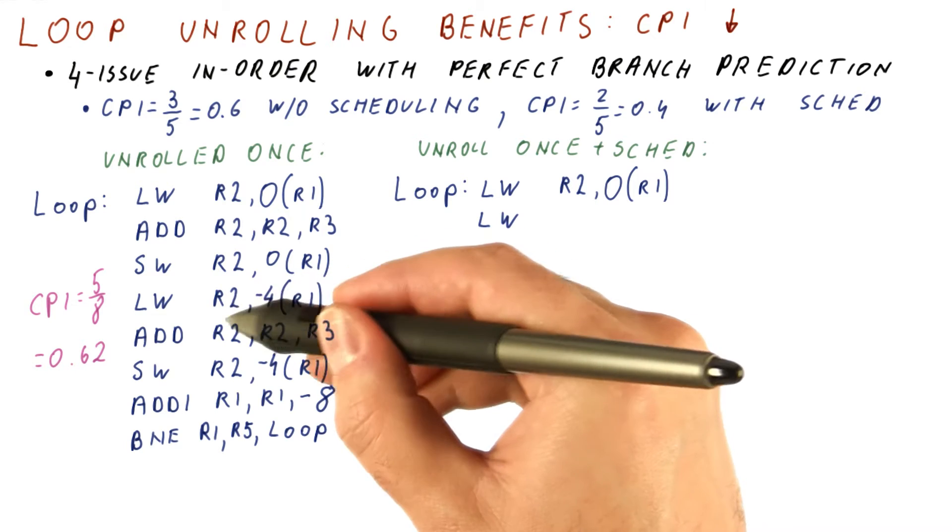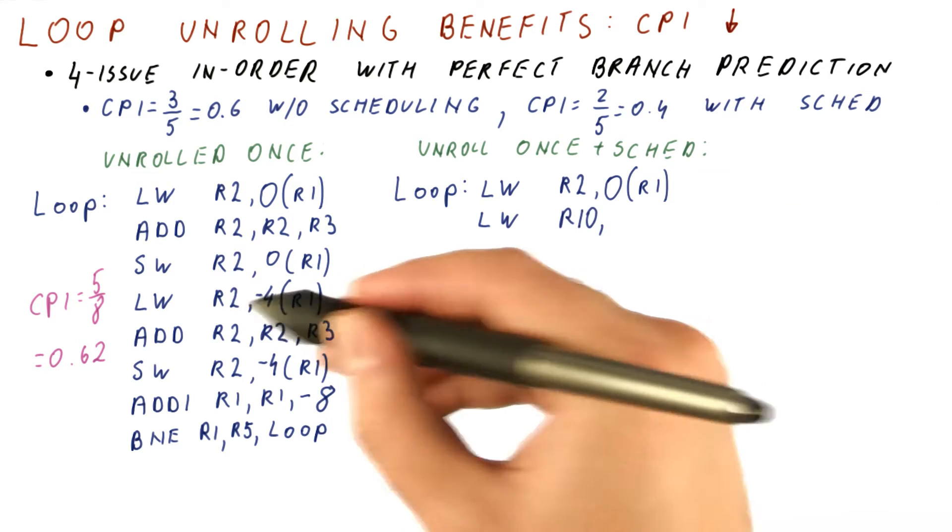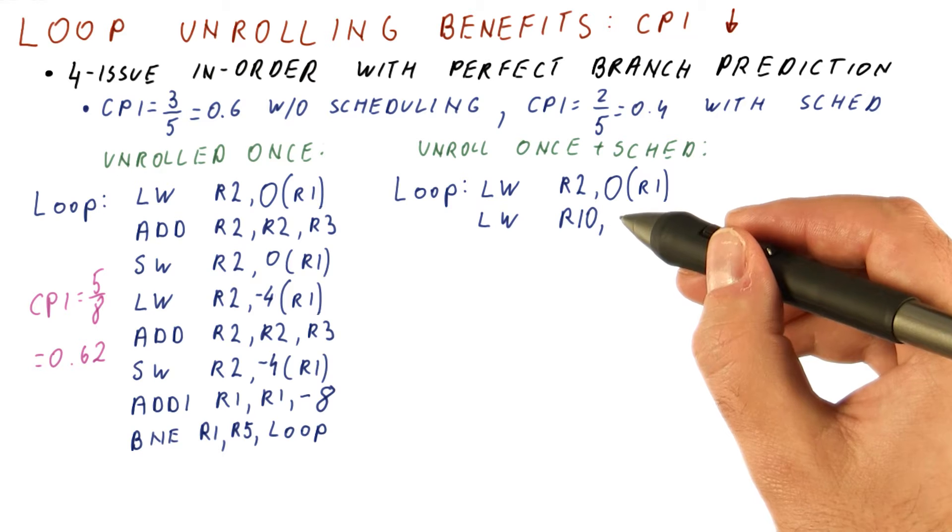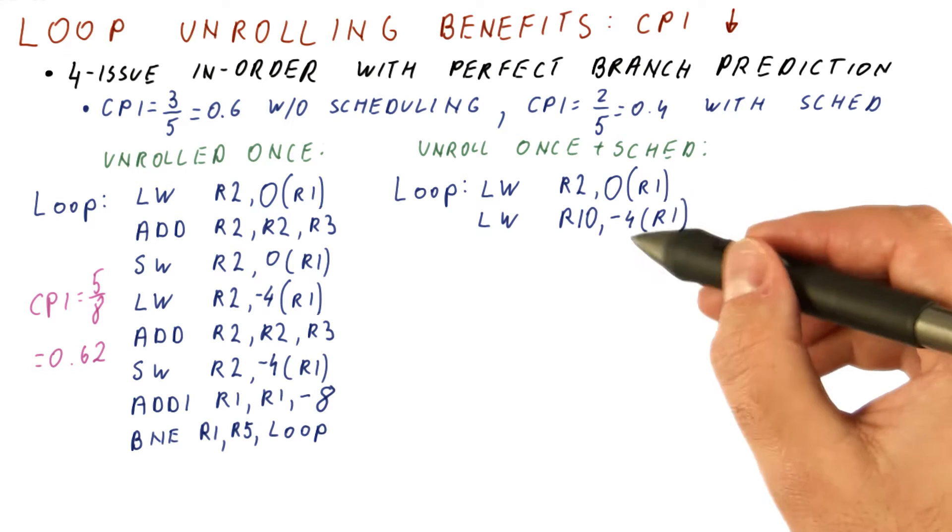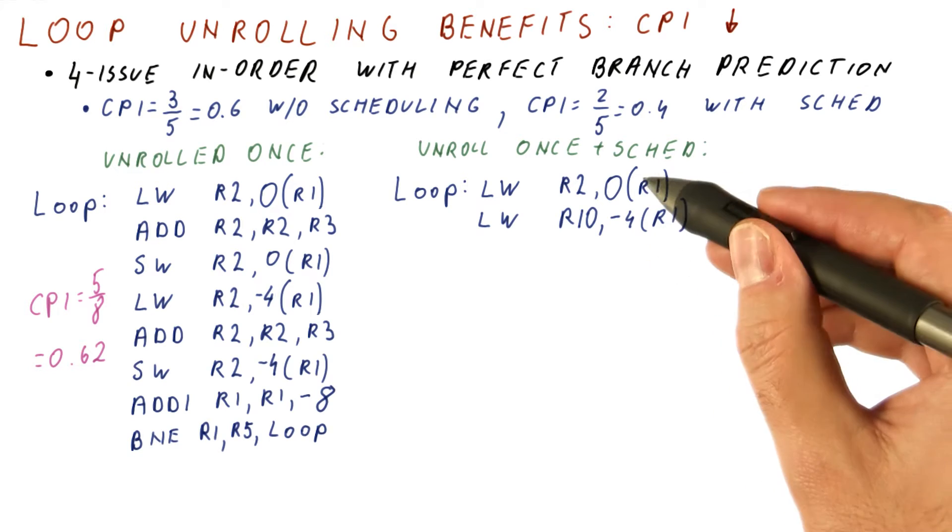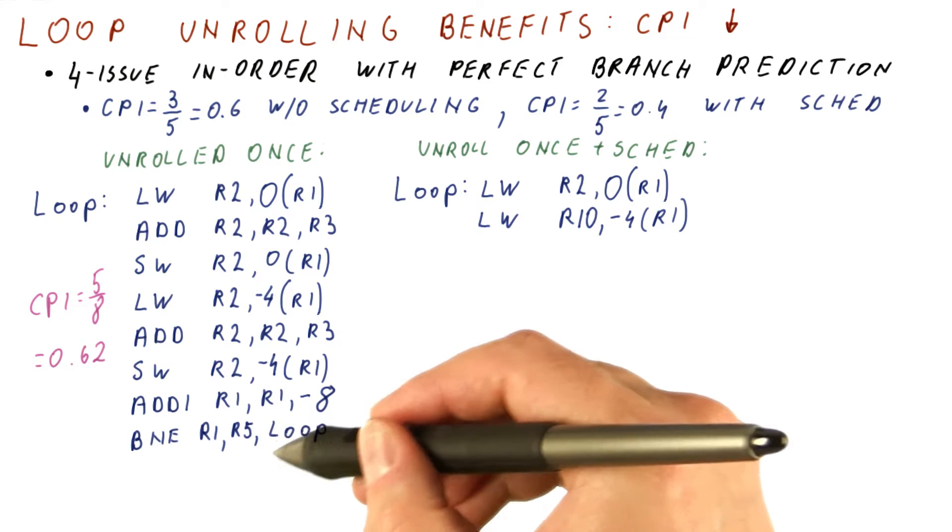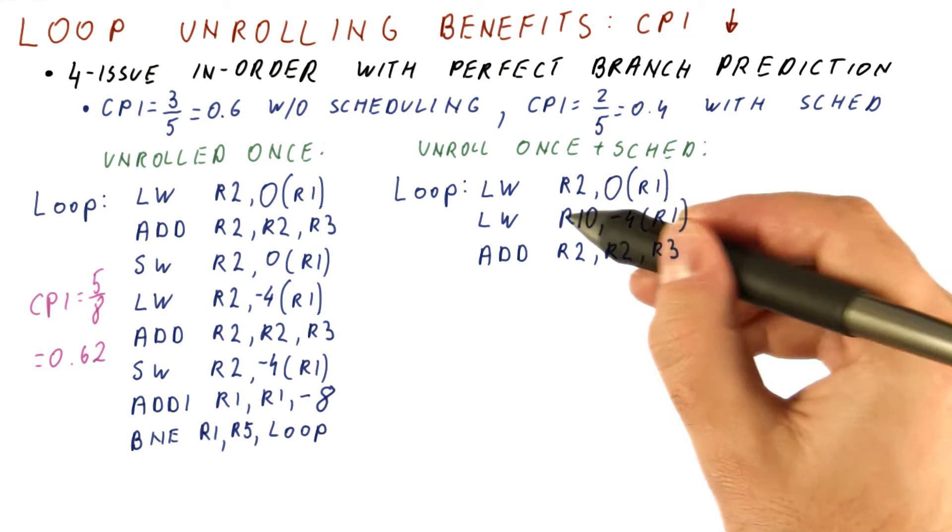However, we cannot store the value into R2, so we will have to use another register, let's say R10, for that. So these two now can execute in the same cycle. And if you remember, so could the branch.